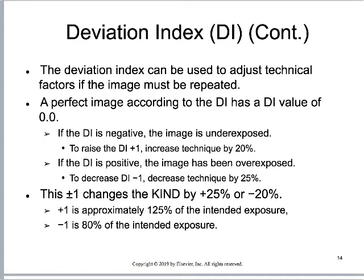How do we use the deviation index? We can use it as a simple measure: do I need to adjust my technical factors? Did I give sufficient exposure? Did I overexpose the patient? The deviation index tells me a simple yes or no. If the DI is negative, the image is underexposed — to raise it by plus one, increase technique by about 20%, increase the mAs. If the DI is positive, the image has been overexposed — decrease the mAs by about 25%. Each plus or minus one in the deviation index indicates an indicated air KERMA difference of about 25% to 20%.